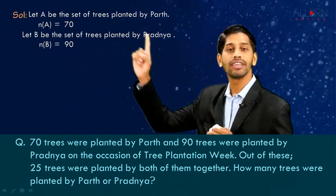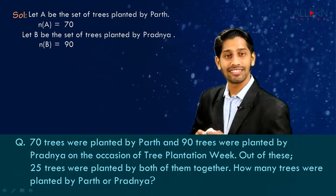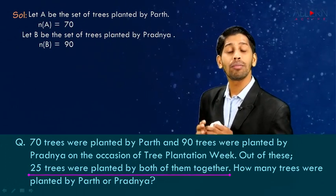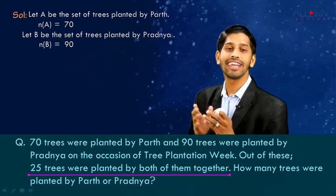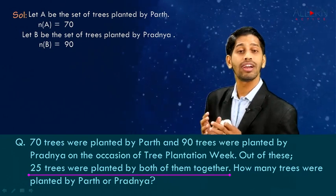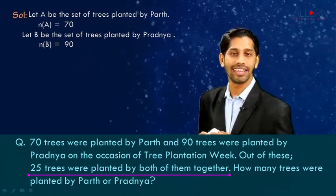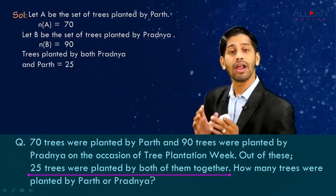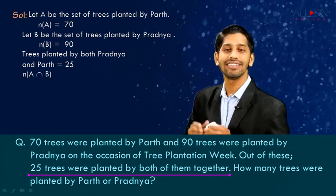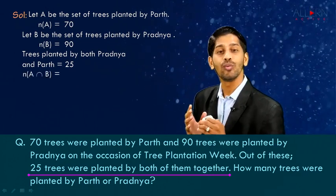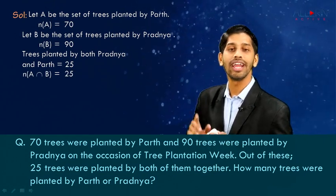So two pieces of information are given to us: n(A) = 70 and n(B) = 90. Further, it says that out of this, 25 trees were planted by both of them. When we say 'both,' it means intersection. Remember, whenever we come across words like 'and' or 'both,' it means intersection. So the total number of trees planted by both is given as 25, that is n(A ∩ B) = 25. Now we have three pieces of information: n(A), n(B), and n(A ∩ B).